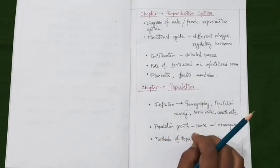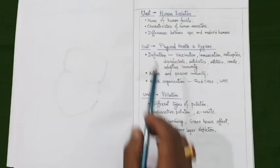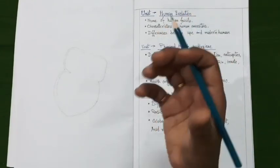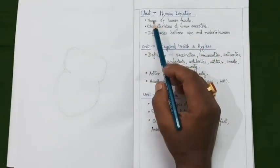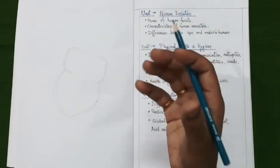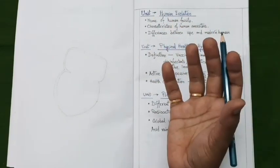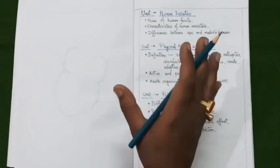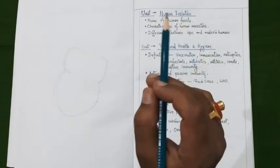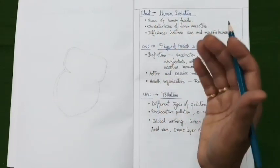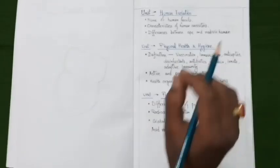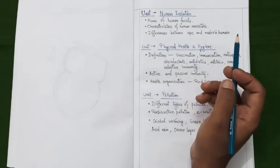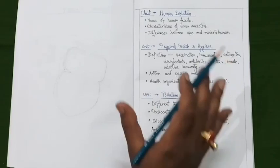Our next unit is human evolution. Under this unit, prepare questions on the names of human fossils such as Dryopithecus, Australopithecus, Homo Habilis, and Homo Erectus. These are the different hominid fossils, and you should know the different characteristics of these human ancestors. You may certainly expect a question on the differences between apes and modern humans.